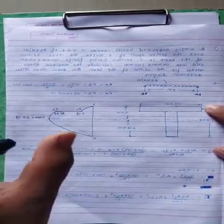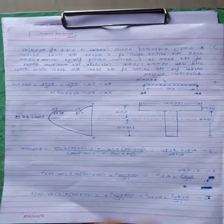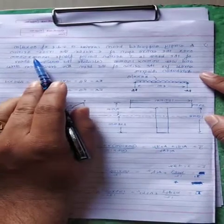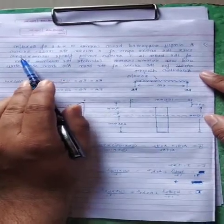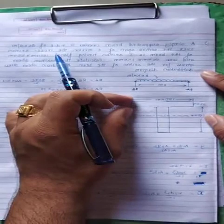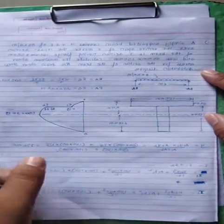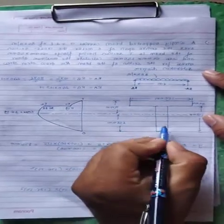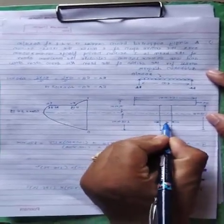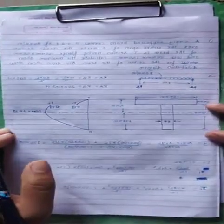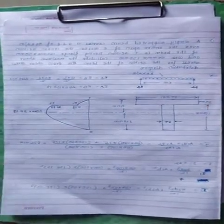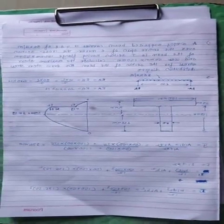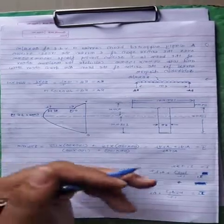Next, the dimensions of the T section are given. The flange is 150 mm wide and 50 mm deep. The web is 50 mm wide and 150 mm deep. First, we have to find ȳ — that is the distance of the centroid (CG) from the top or bottom surface.